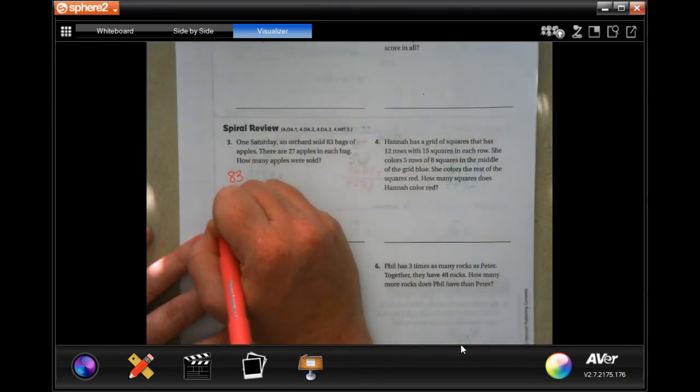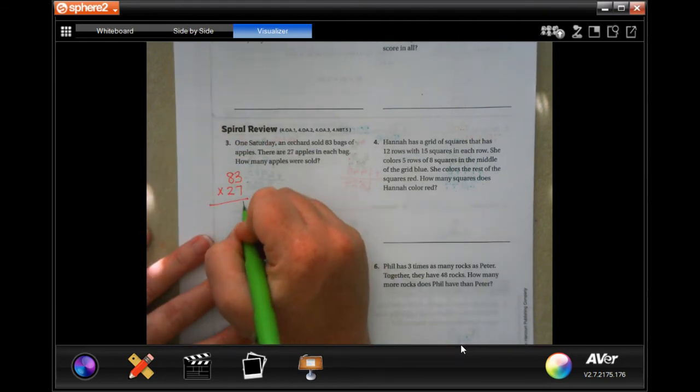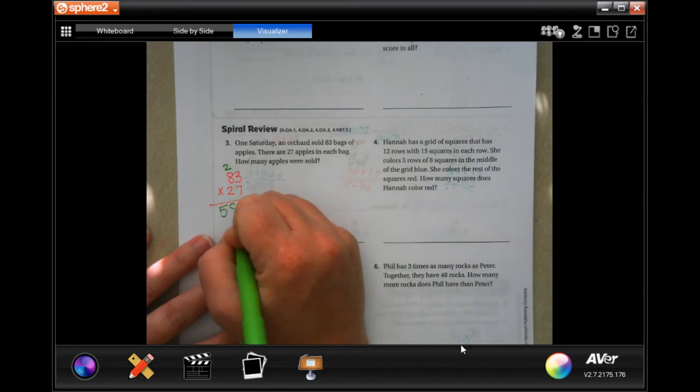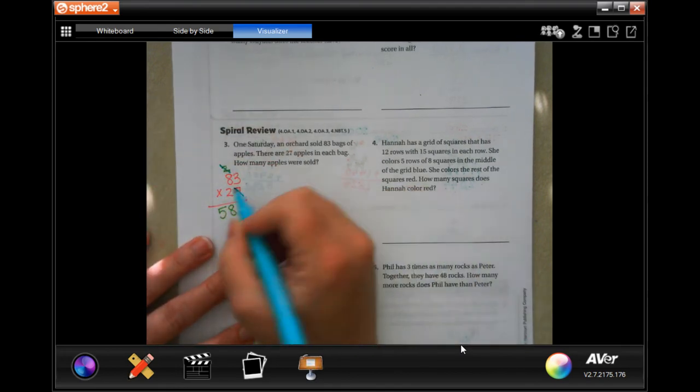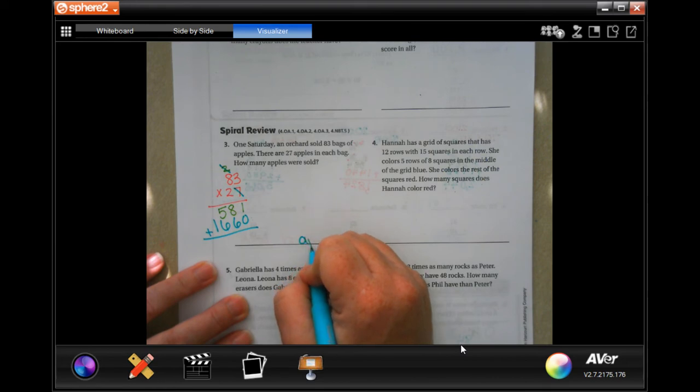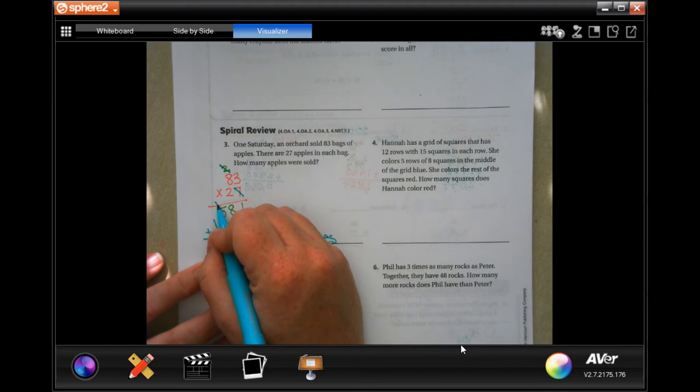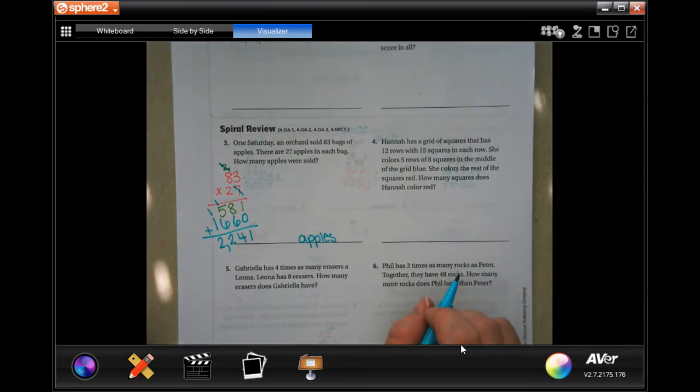83 times 27. 7 times 3 is 21, carry the 2. 7 times 8 is 56, plus 2 more, 58. Tic-tac-toe. 2 times 3 is 6, 2 times 8 is 16. Add them up. And whatever it is, it's going to be in apples. 1, 14 carry the 1. That would be 12, carry the 1, and 2. So 2,241 apples.